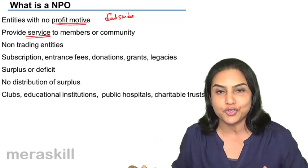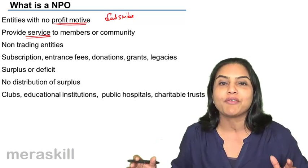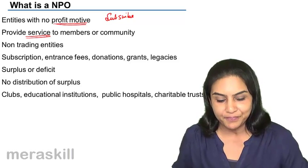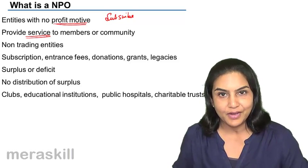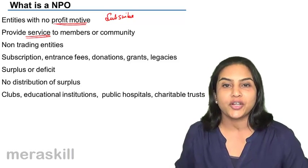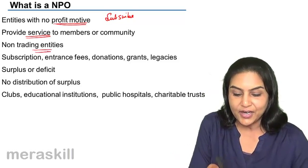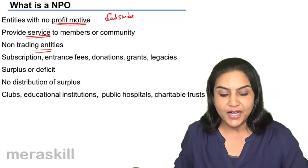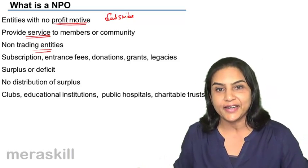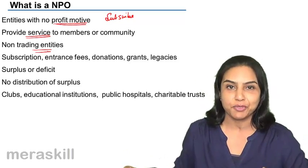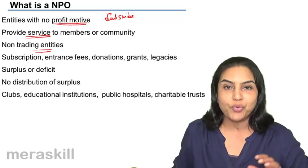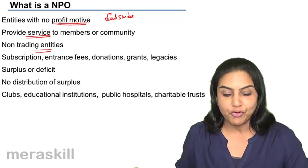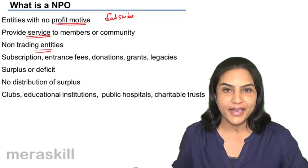Profit is not distributed to the members because the members are not really owners. They are members of a society who have come together for a specific purpose. They are not trading entities. We have discussed final accounts of trading entities in another module; now we are discussing the final accounts of non-trading entities.